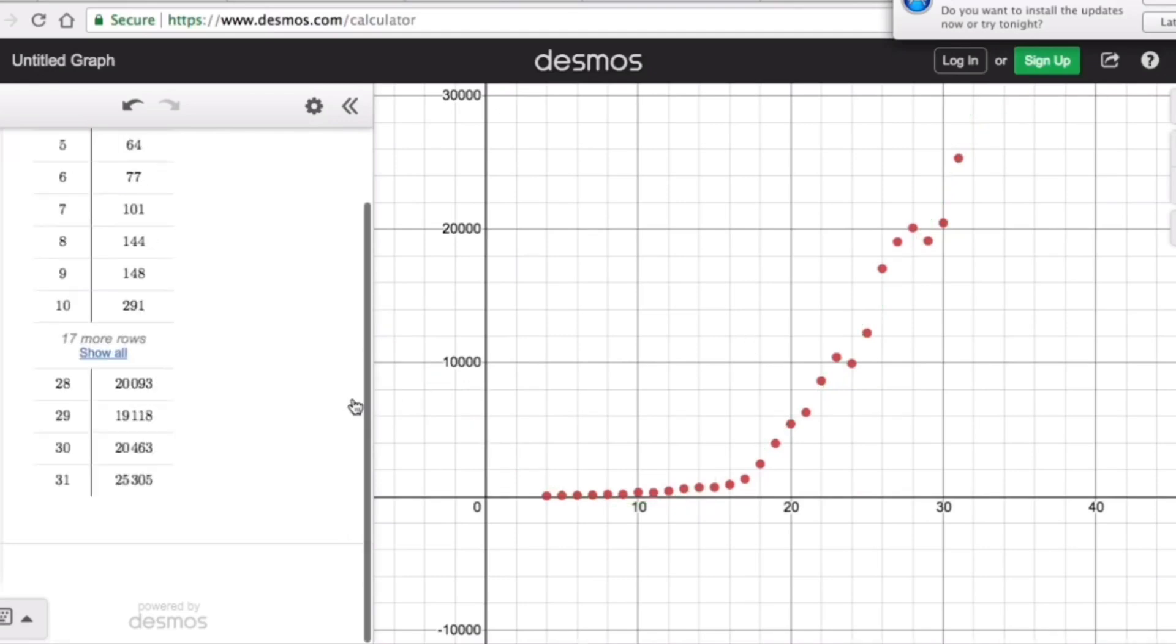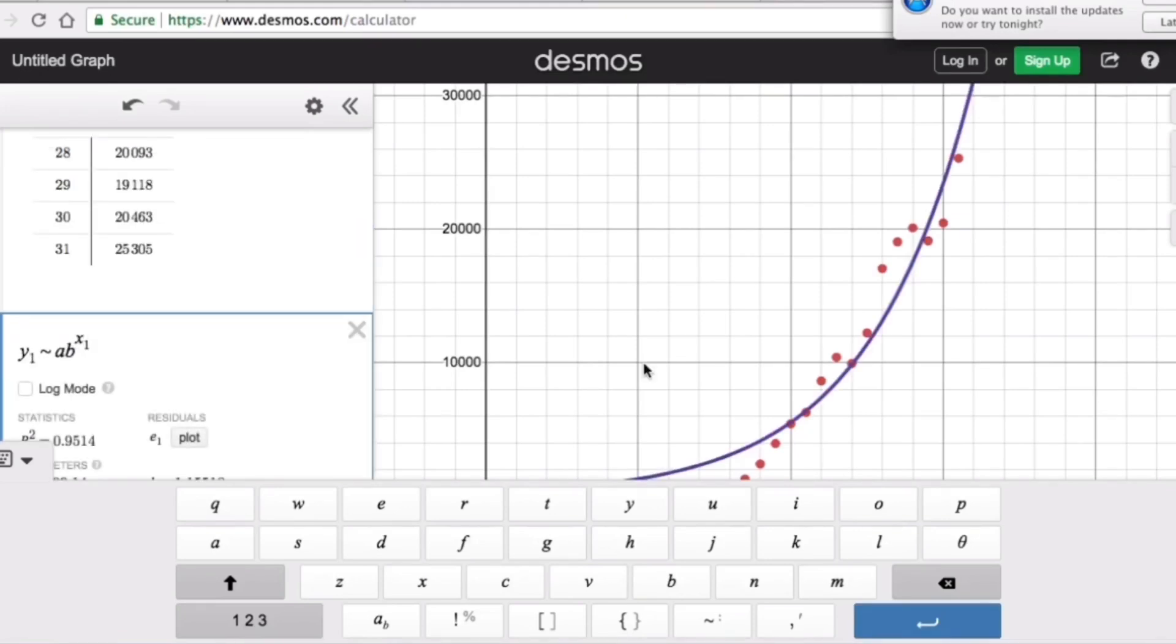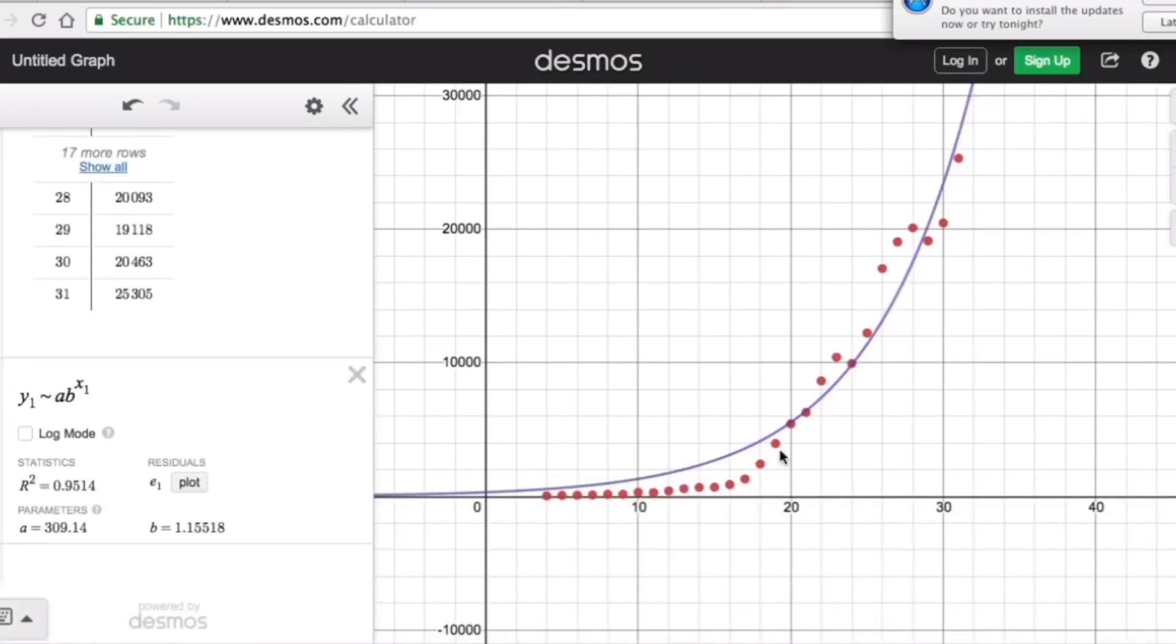Now let's try exponential. So the equation for exponential would be y sub 1 and then we go to the tilde symbol right here. And then we go a, b to the power x sub 1. And then let's see if this graph would fit. So pretty much this graph fits better than the rest of the graph. Although it's not really a perfect graph, but this is way better than the other model. So then we can go ahead and say that we can use the exponential equation or exponential function to model this coronavirus cases in the U.S.